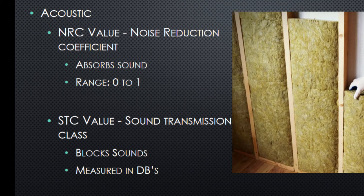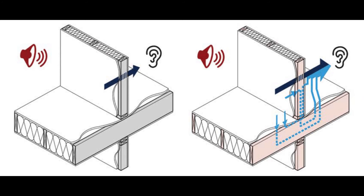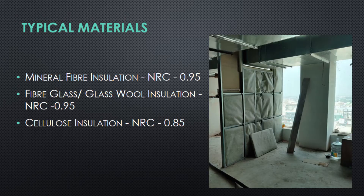NRC value, being a coefficient, has a range from 0 to 1, where 0 is the lowest insulation value and 1 is the highest. STC value is essentially the decibel value by which a material can stop sound from transferring. For example, if a complete partition system can stop sound by 40 dB, its STC value will be 40. This means if you are in a room with a partition rated at 40 STC and talking loudly at approximately 80 dB, only 40 dB of sound will travel outside while the remaining 40 dB will be stopped by the partition system.